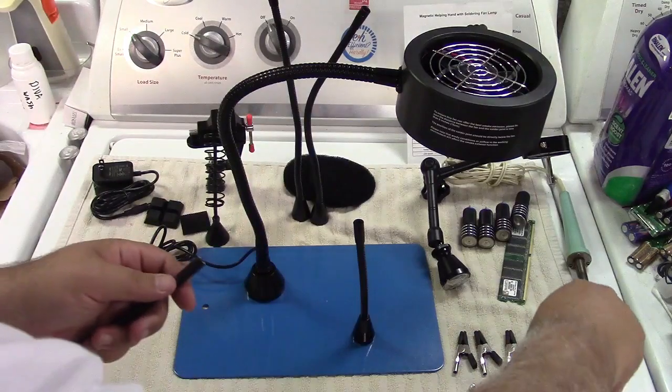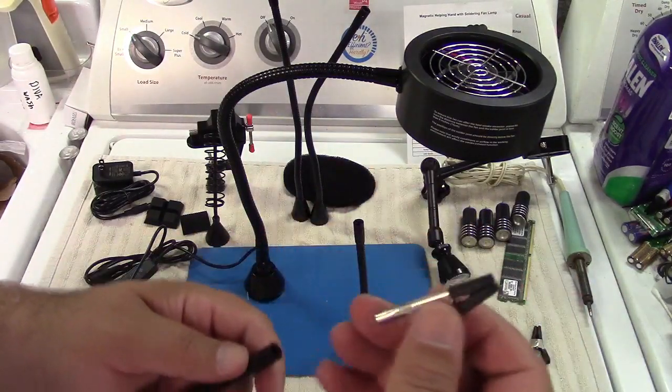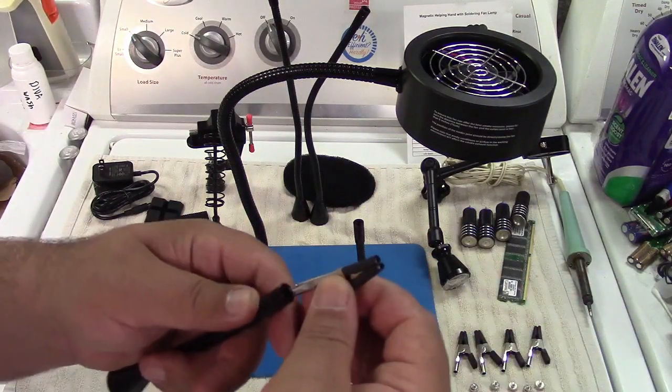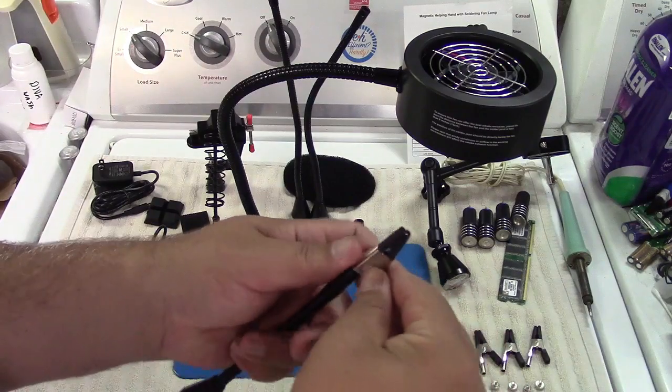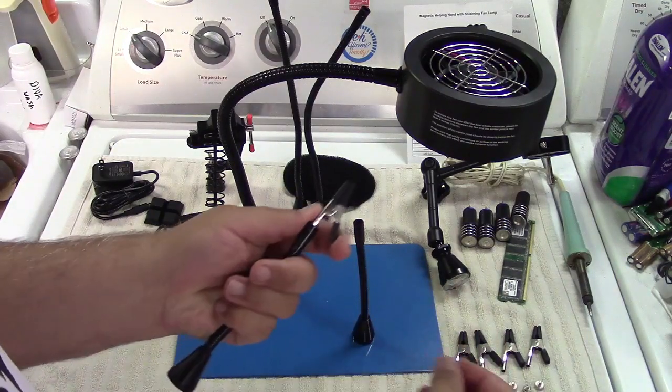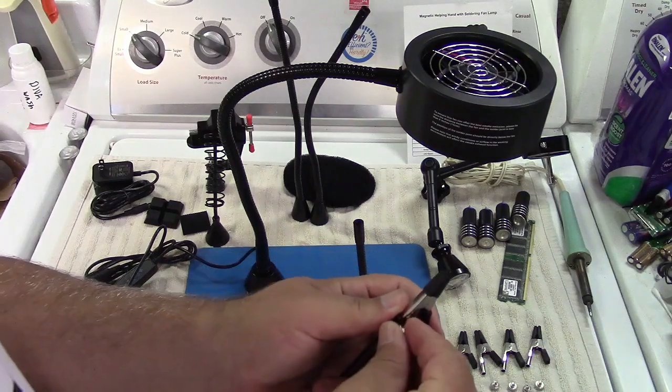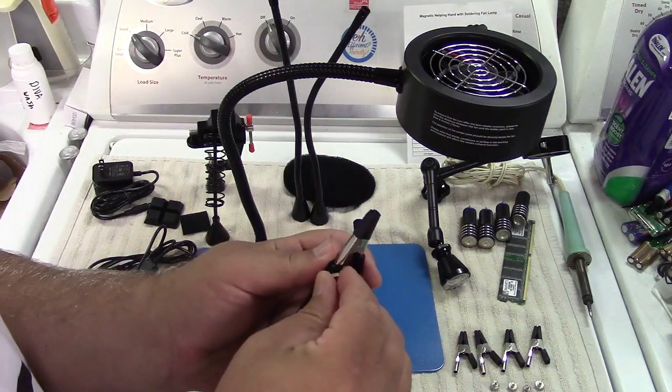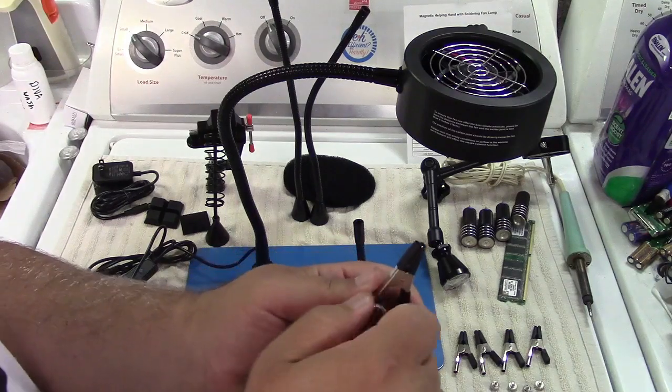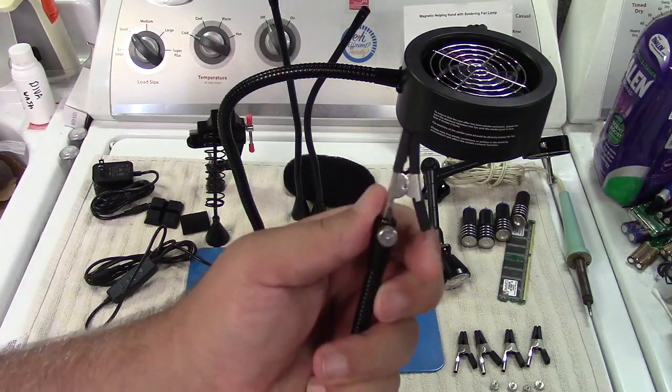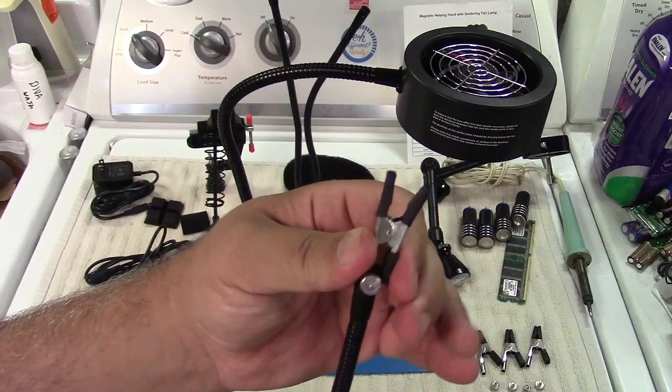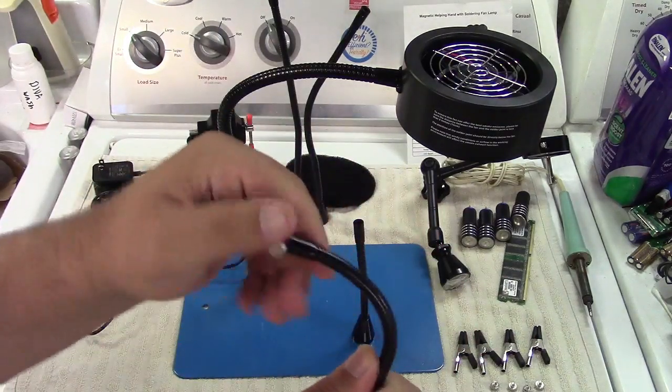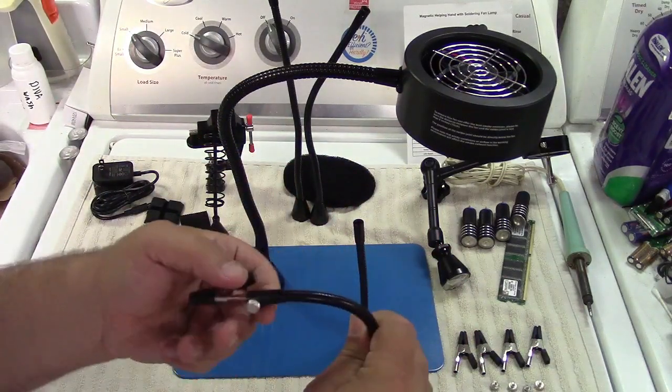The way that goes together, take the clip. They give you one extra one by the way. Just goes right in there like that. And then the screw will go in right over here. And now you have an alligator clip that you can use.